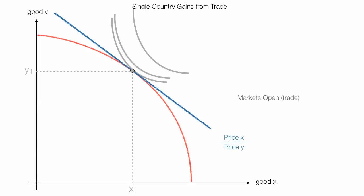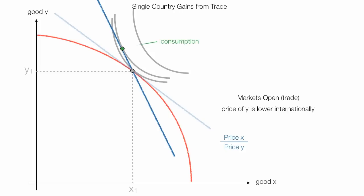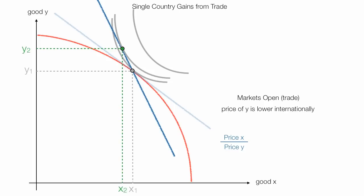Now imagine markets open up. The price of Y is lower internationally, so the trade line rotates. Now the country can consume on a higher indifference curve. At first it still produces at the same point until it adjusts. Domestic production stays right there initially. The consumption of good Y goes up and the country imports — they import Y2 minus Y1, which is the quantity of imports.